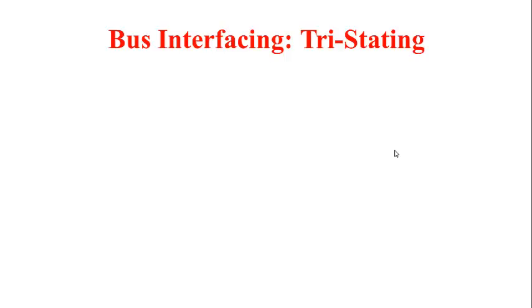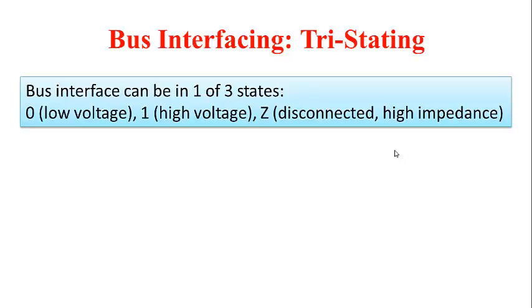Bus interfacing uses the notion of tri-stating, where there are three states. We are familiar with the first two states, 0 and 1, 0 usually represented by low voltage and 1 represented by high voltage. And we have a third state which is represented with Z and this denotes a disconnected or high impedance state.